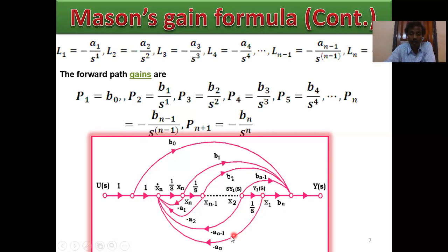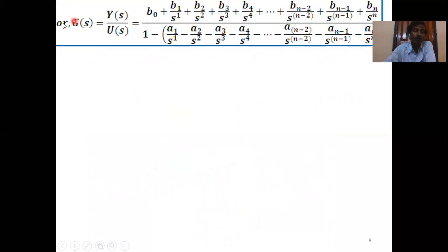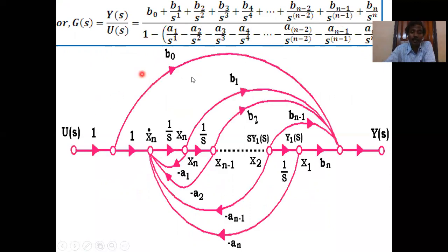So G(s) equals Y(s)/U(s): B0 plus B1/S plus B2/S² plus B3/S³ plus dot dot dot plus BN/S^N, all divided by 1 minus the sum of individual loop gains, as already discussed. This is the SFG graph.